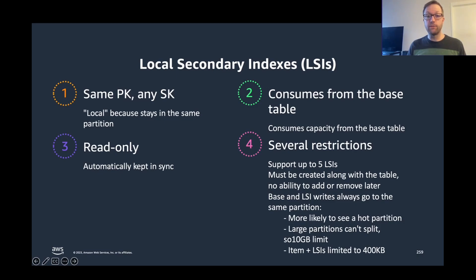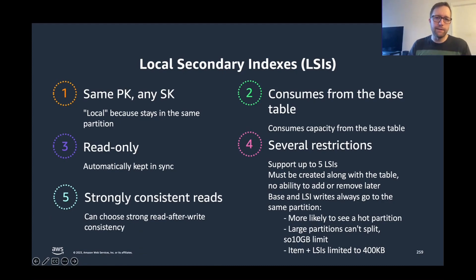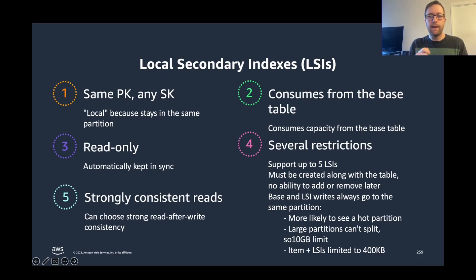DynamoDB items have a max 400 KB size. With GSIs, that's per item and it can replicate out to each GSI. But with LSIs, the item plus the LSIs have to fit within 400 KB — so that's a lot of restrictions. Looking at the slide, why would we pick LSIs over GSIs? It's the strongly consistent reads. With LSIs, because everything is kept together, the same time you do the write to the base table it's also written to the LSI, and you can do strongly consistent reads against the LSI. That's the one and only advantage LSIs have over GSIs — and when you need it, you need it. That's the reason LSIs exist.